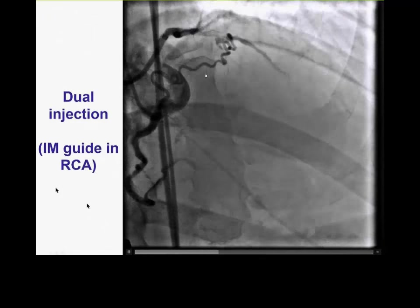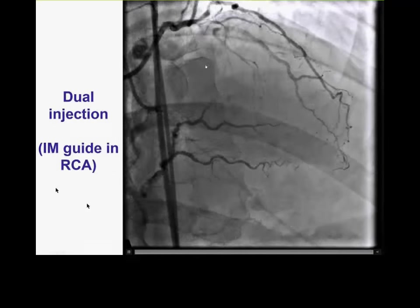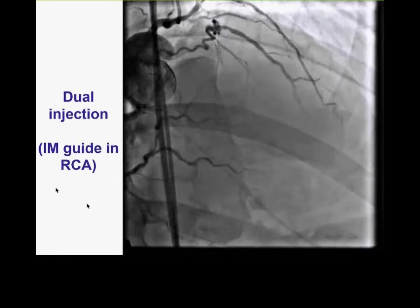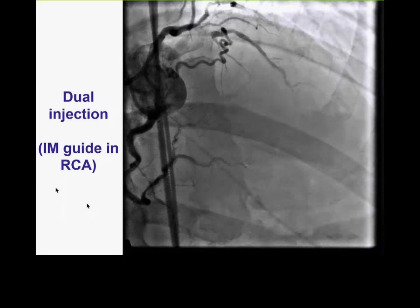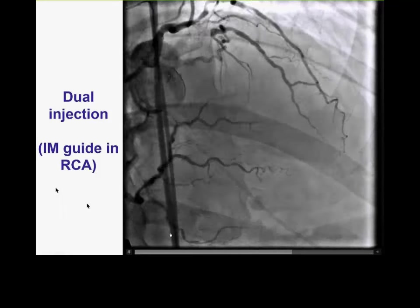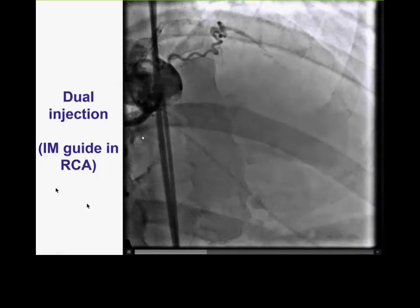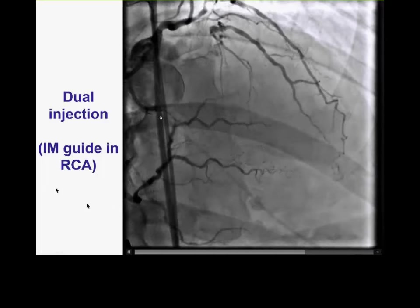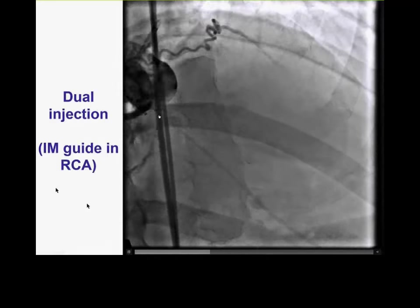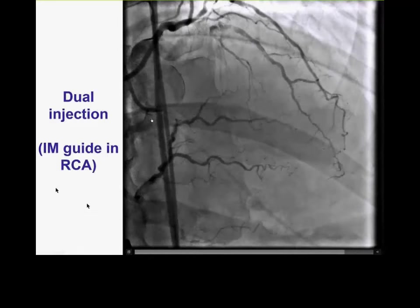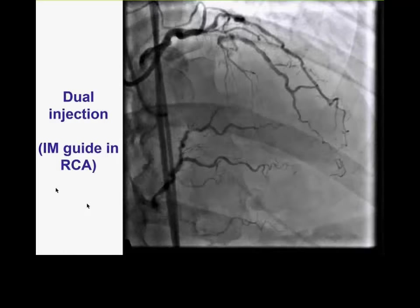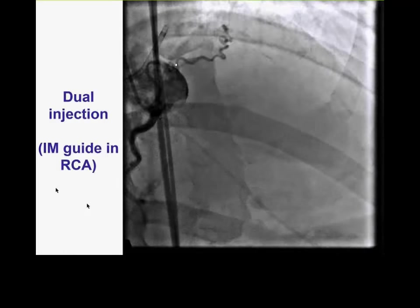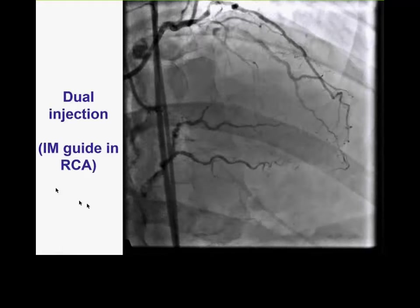We used a 6Fr guide instead of our standard 8Fr because the chance of performing retrograde recanalization was very low — this is a very tortuous collateral and it is the single collateral going to this territory. Going through it carries significant risk of ischemia, hemodynamic instability, or angina. Our standard setup is two 8Fr guides that are 45 centimeters long reaching to the diaphragm, but here a big guide is in the antegrade vessel and a smaller guide in the retrograde collateral vessel.